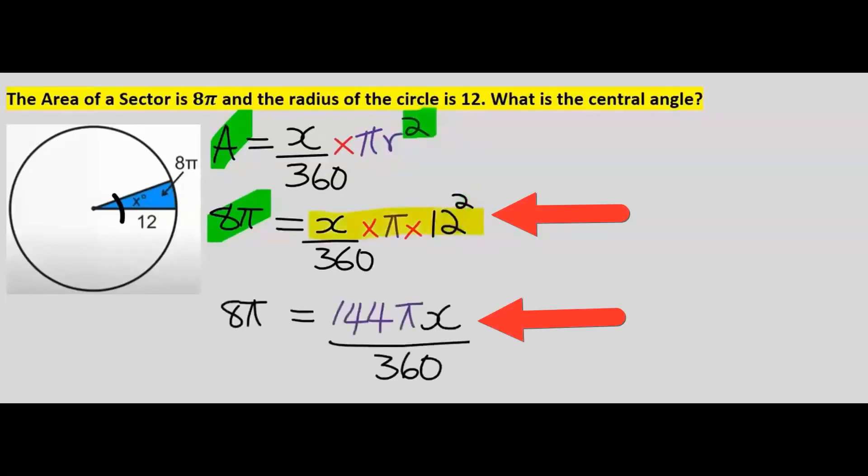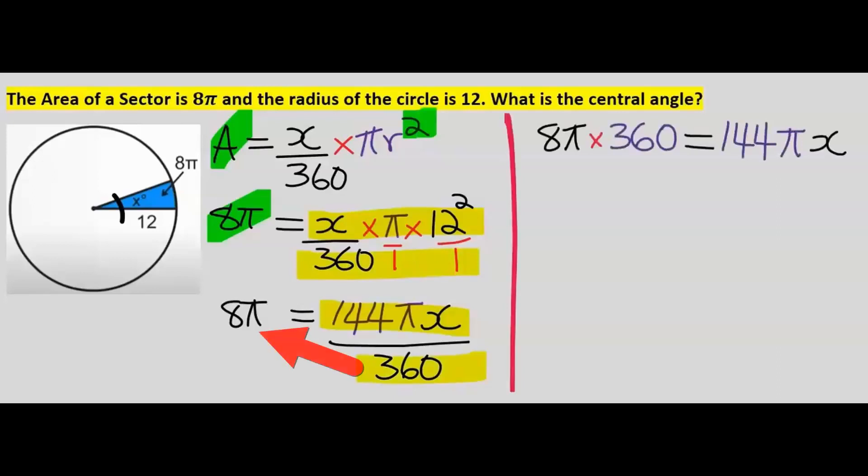At the numerator, everything we multiply and you're going to get this. And 360 will multiply at the denominator and you're going to get this.